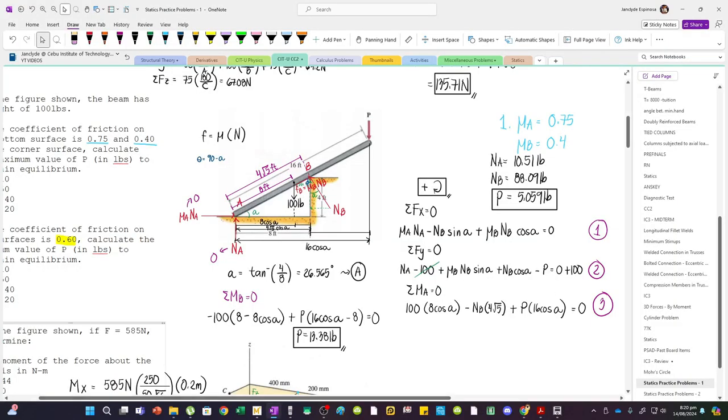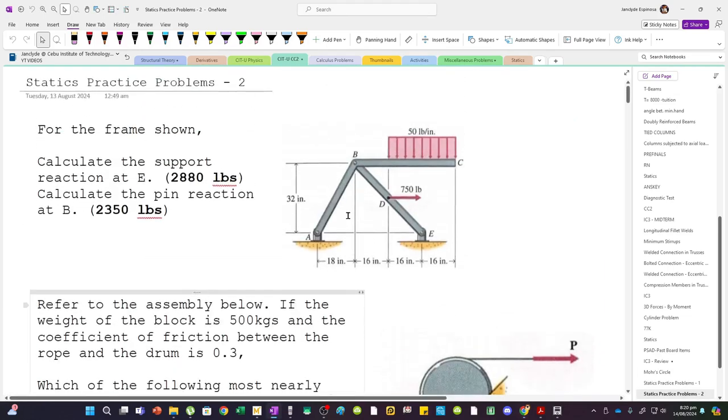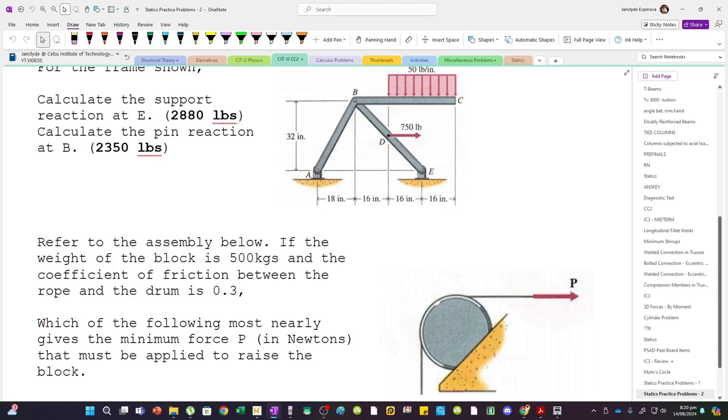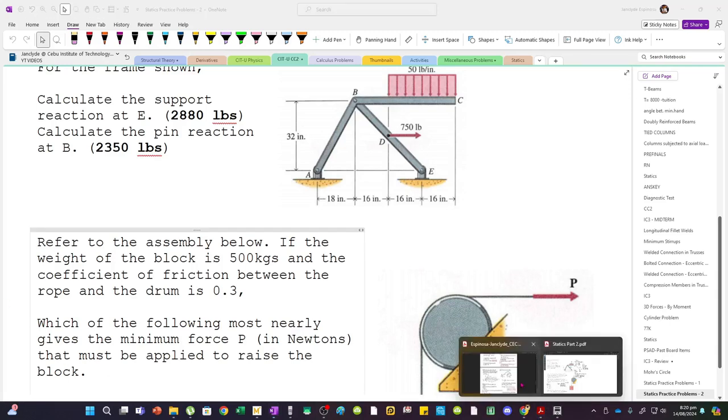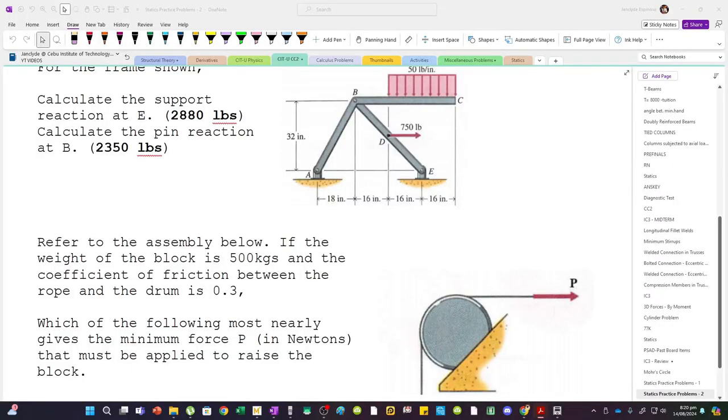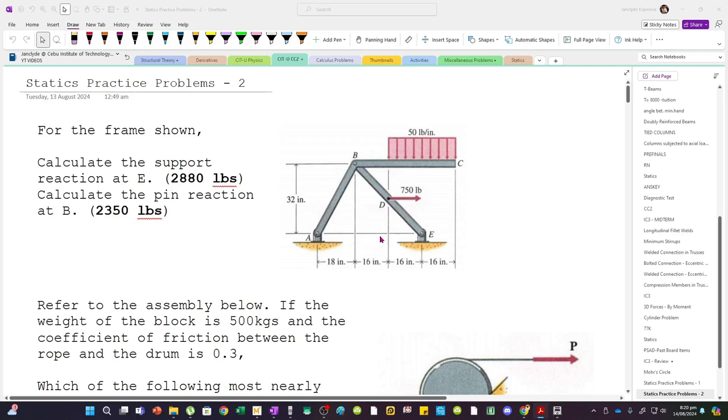Since we're done in part 2, we have the following problem. For this problem, the first one involves frame analysis. Now, to solve this efficiently, let's first resolve the resultant of this force. It's 50 pounds per inch. Multiply by 16 plus 16, that's the resultant. And then, it will act at the center, because this is a uniform load.